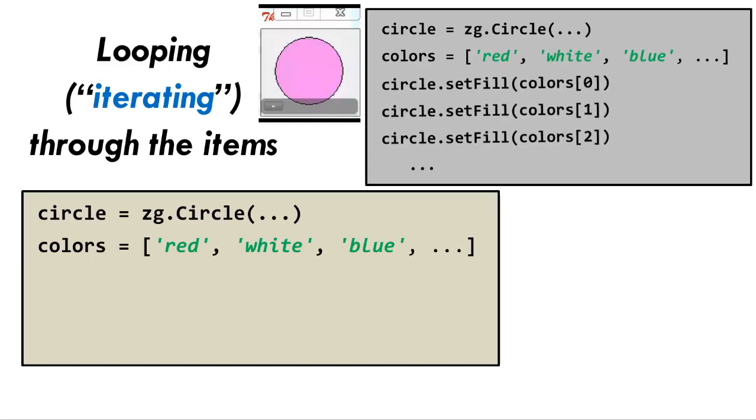But instead of a long list of set fills, we make a single loop, using a for statement as usual. The loop should go as many times as we have colors in the list. Let's come back to that shortly.